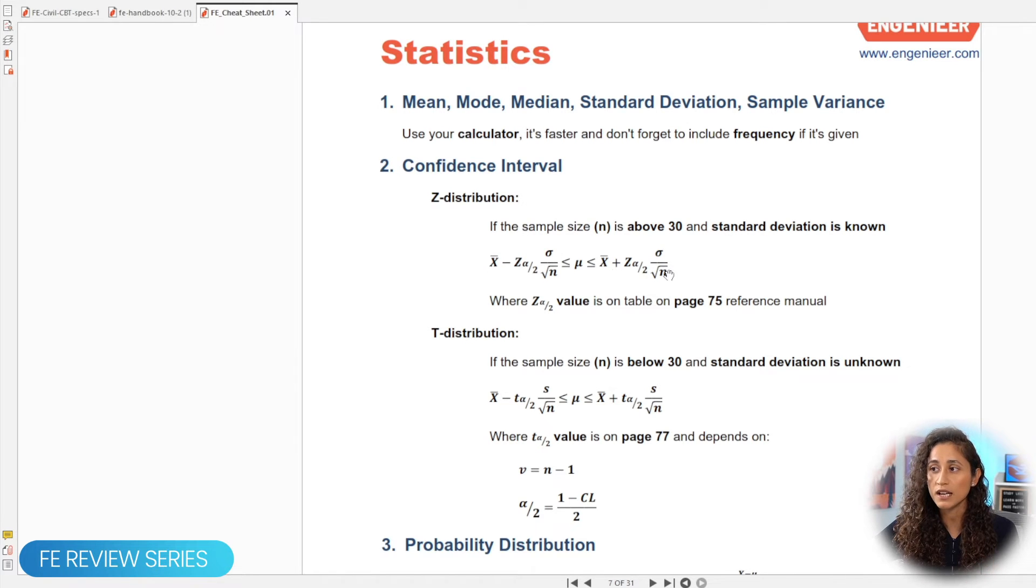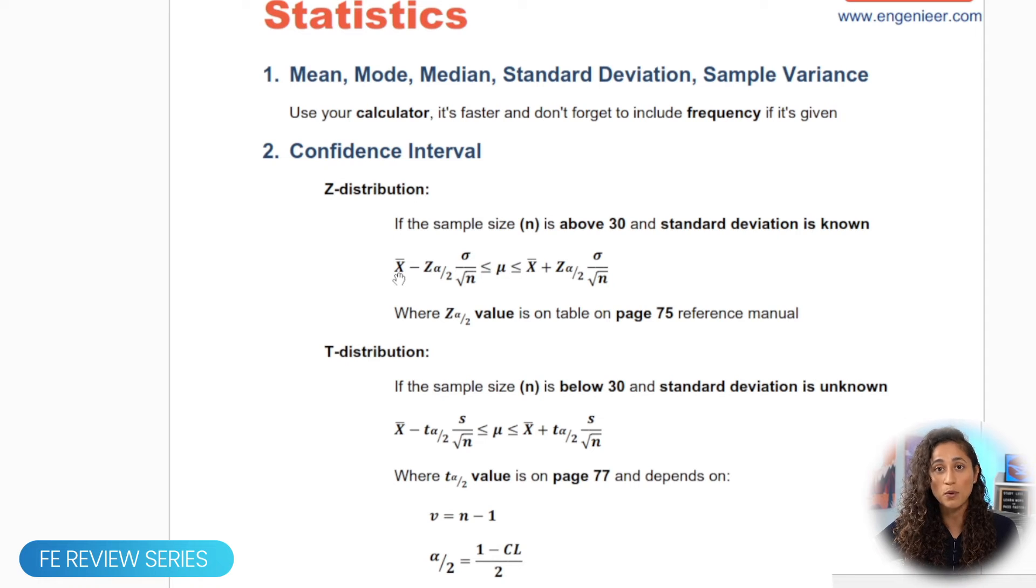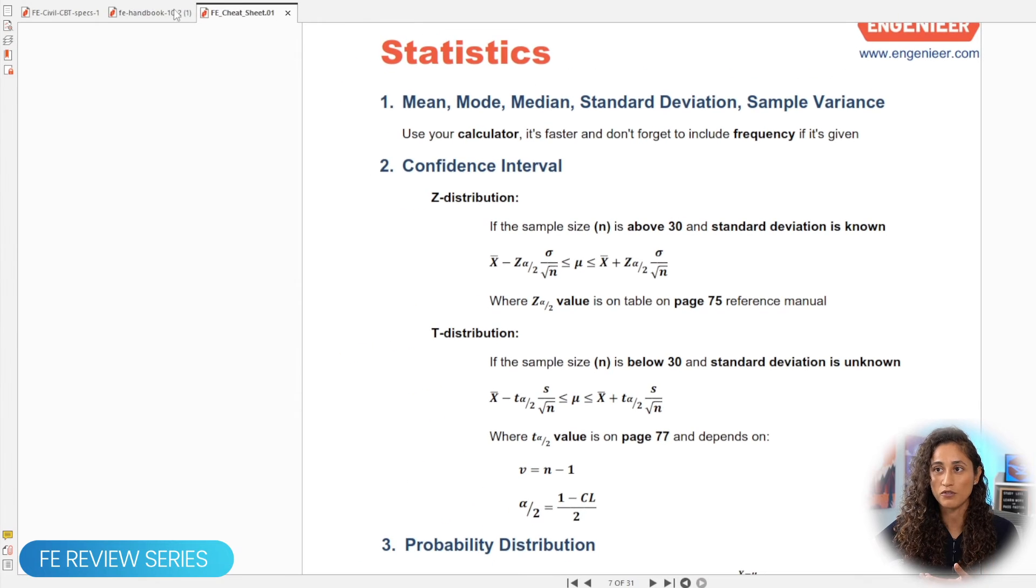Now, if we take a look at this equation here, so we have X bar, which is the sample mean, which was given to us in the problem, sigma, that's the standard deviation, and then N, that's the sample size, which is given to us as well. The only value that we don't have is the Z alpha over 2, but here it says that Z alpha over 2 value, you can find it on table 75 on the reference manual.